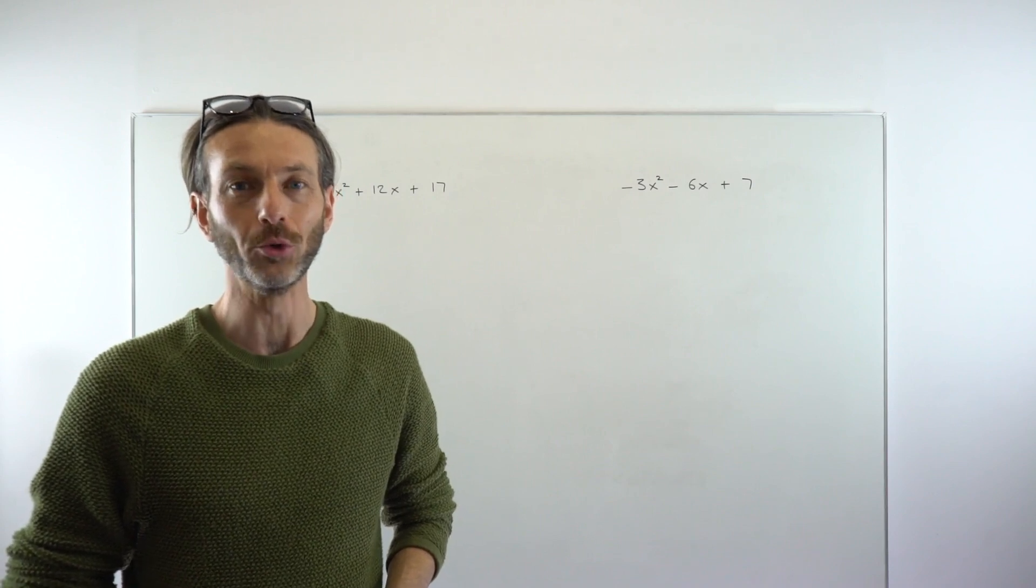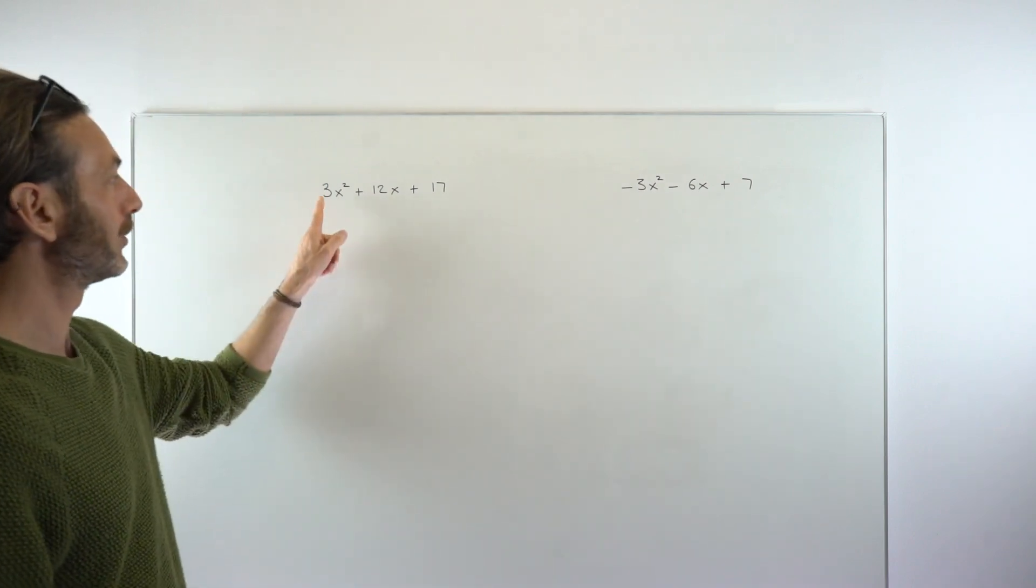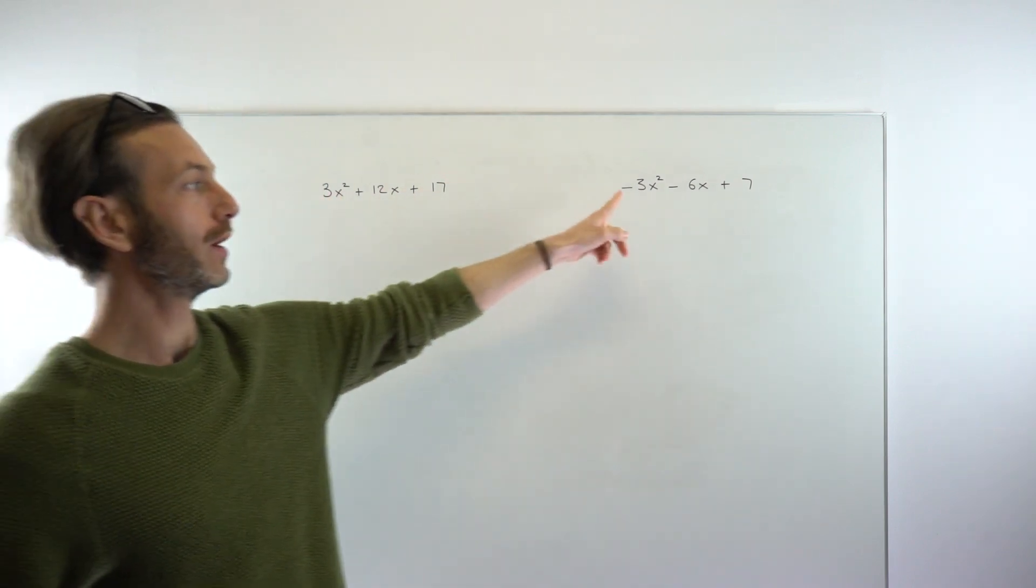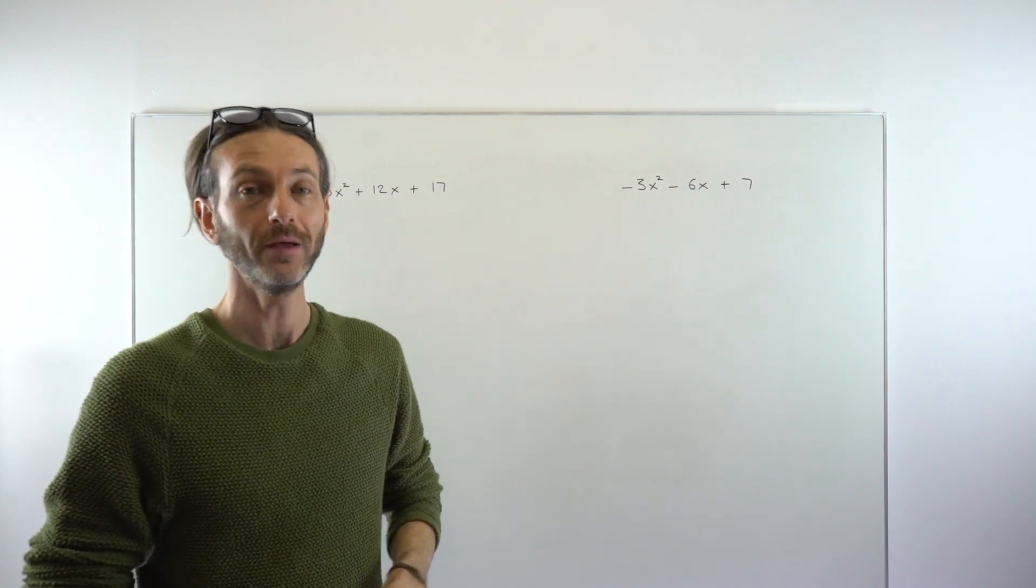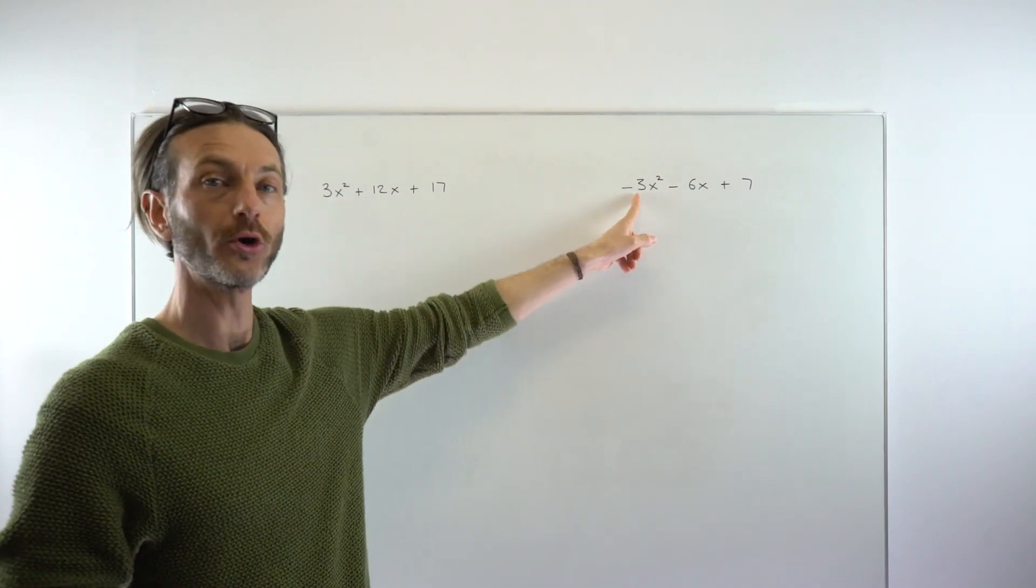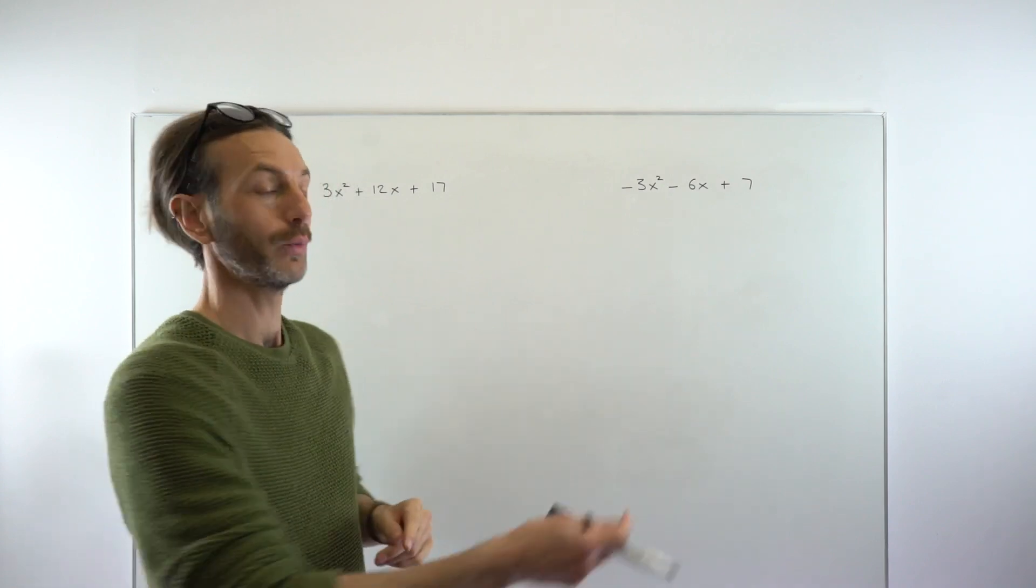In this video we're going to consider how you write a trinomial in completed square form if you've got a coefficient other than one—in other words, some number in front of the x-squared term. If there's no number in front of the x-squared term, this process is significantly easier.